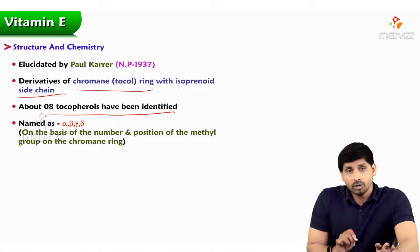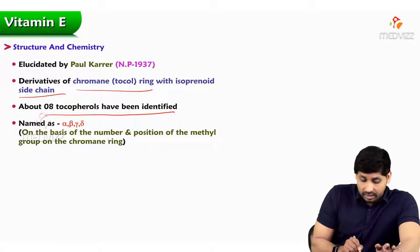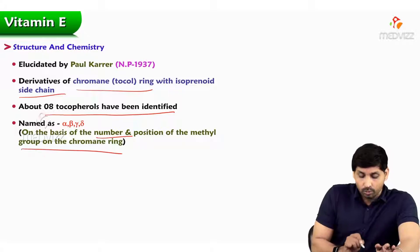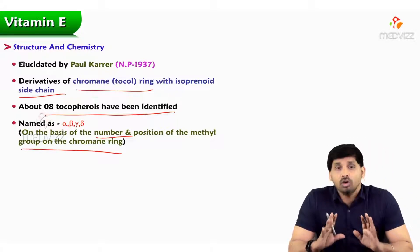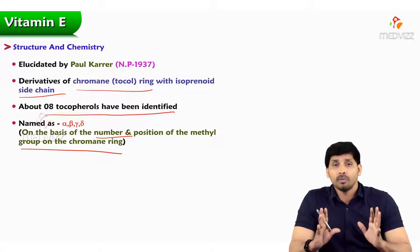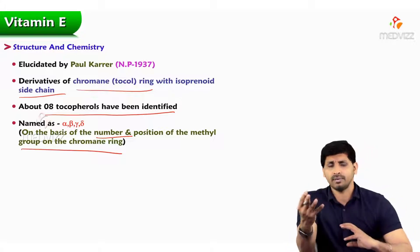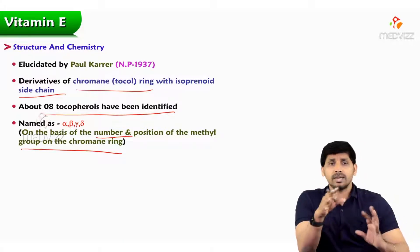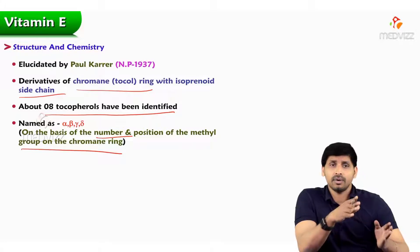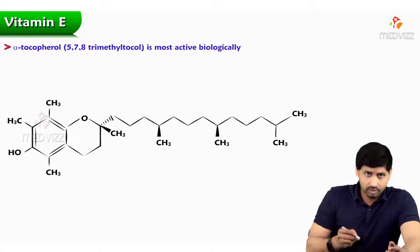Out of the eight tocopherols, the important ones are alpha, beta, gamma, and delta tocopherol. The difference between them is based on the number and position of methyl groups on the chromanol ring — whether the methyl group is at the third, fourth, fifth, or second carbon. Based on the methyl group placement, they are called alpha, beta, gamma, and delta tocopherols.